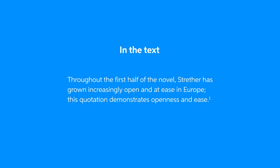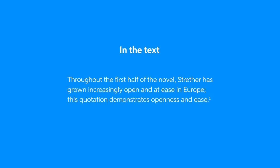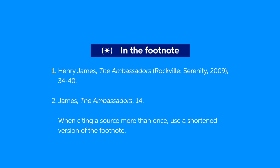In Chicago Style, footnotes take the place of in-text citations. Instead of naming the author in the text of the sentence or listing it at the end of the sentence in parentheses, you'll put a number in superscript at the end of the sentence. This number will correspond to a footnote at the bottom of the page, so your reader will be able to easily locate it and see the reference for the quote or paraphrase in your paper.